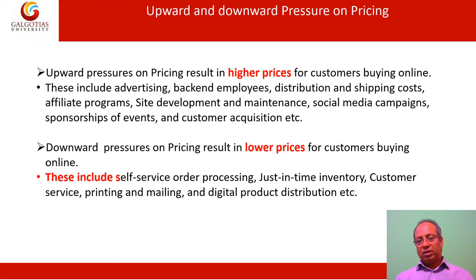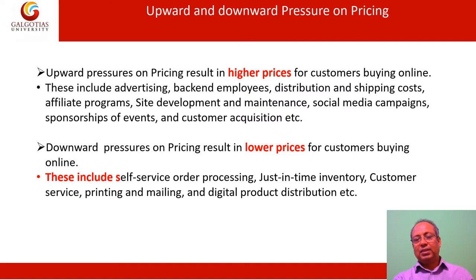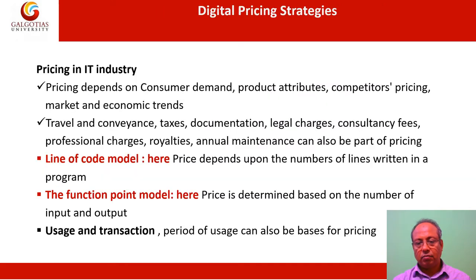Downward pressure on pricing results in lower prices for customers buying online. These include self-service order processing technology, just-in-time inventory, customer service, printing and mailing, and digital product distribution. These help companies to reduce their prices because these processes can be done digitally. Firms can save money by using internet technology for all their internal processes, and the savings can be passed on to the customer.